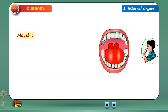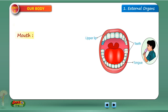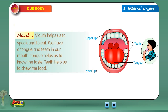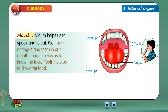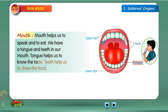The mouth has an upper lip, teeth, tongue, and lower lip. Mouth helps us to speak and to eat. We have a tongue and teeth in our mouth. Tongue helps us to know the taste. Teeth help us to chew the food.